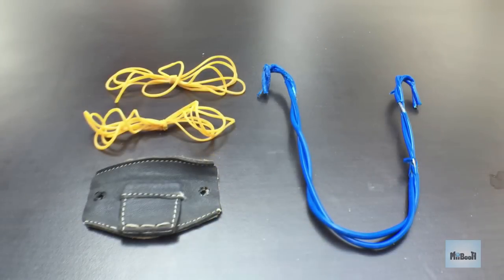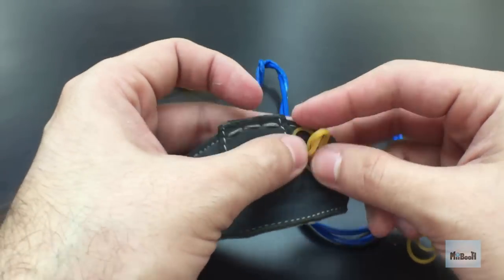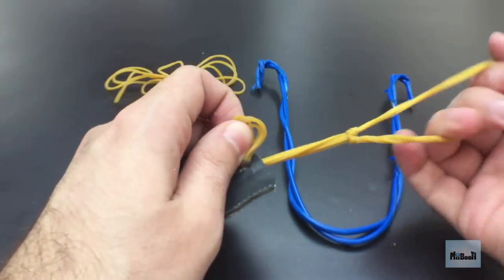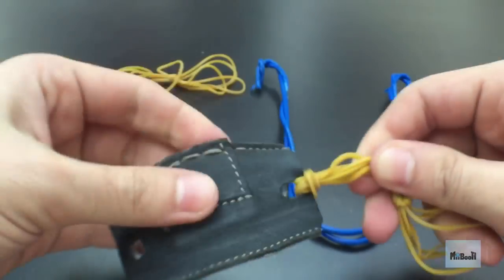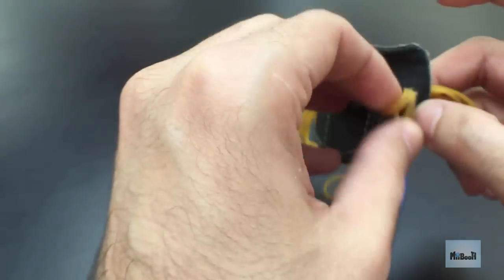Once you have all this ready, it's time to put the whole thing together. Take one set of the rubber bands and knot it through one hole of the pouch like this. Do the same for the other end as well.